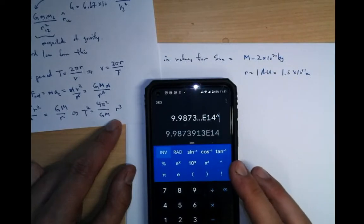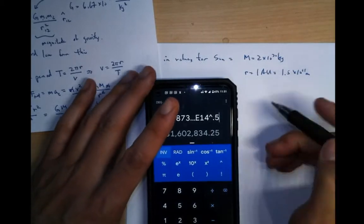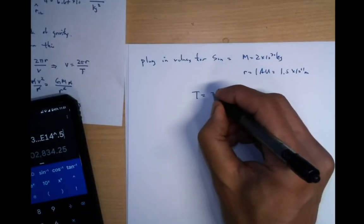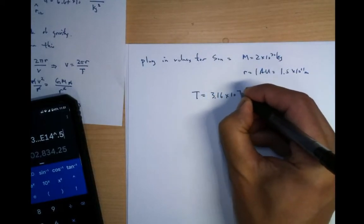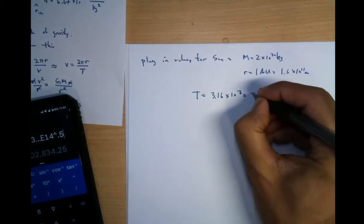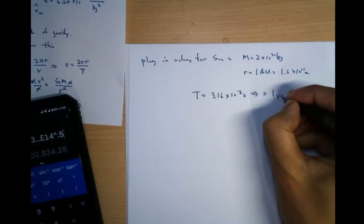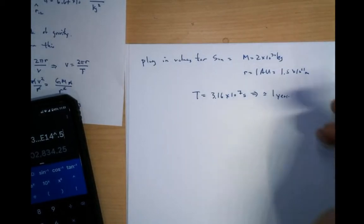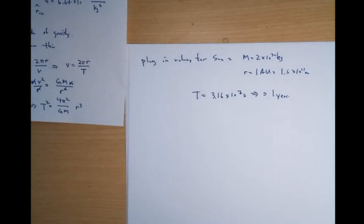Can I do this to the 0.5? So that's actually right. So I end up getting something T is equal to 3.16 times 10 to the 7 seconds, which is approximately 1 year. 3.15 times 10 to the 7 seconds is actually 1 year. So it's actually very, very good. So that's it. That's exactly Kepler's law.